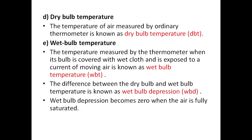When the wet cloth is wrapped around the thermometer, it removes heat from the air and decreases the temperature recorded, because water in the cloth is evaporating and takes up heat as latent heat — changing phase from liquid to vapor. When air is fully saturated, no evaporation occurs, so wet bulb depression becomes zero and DBT equals WBT.